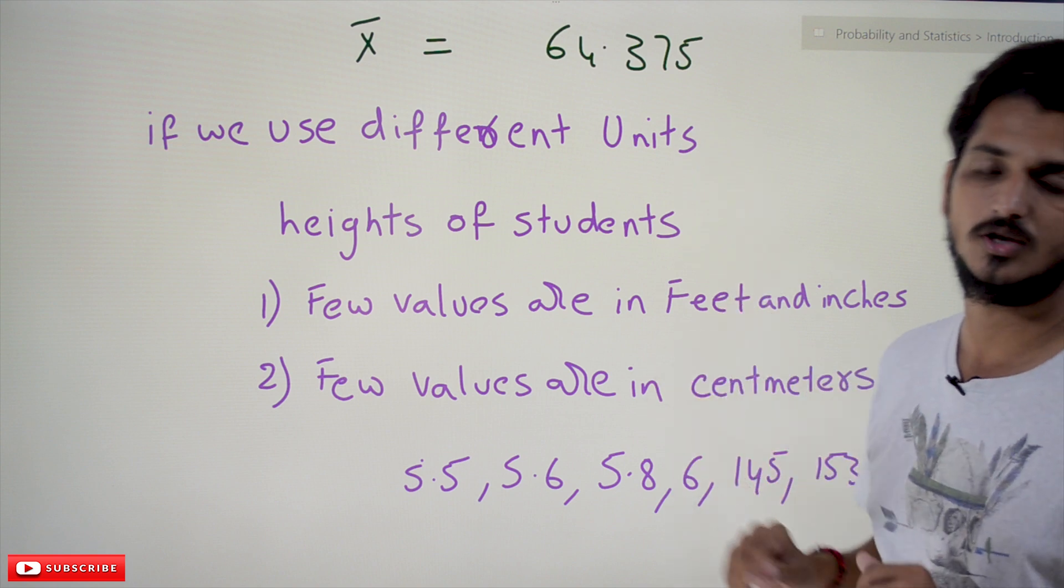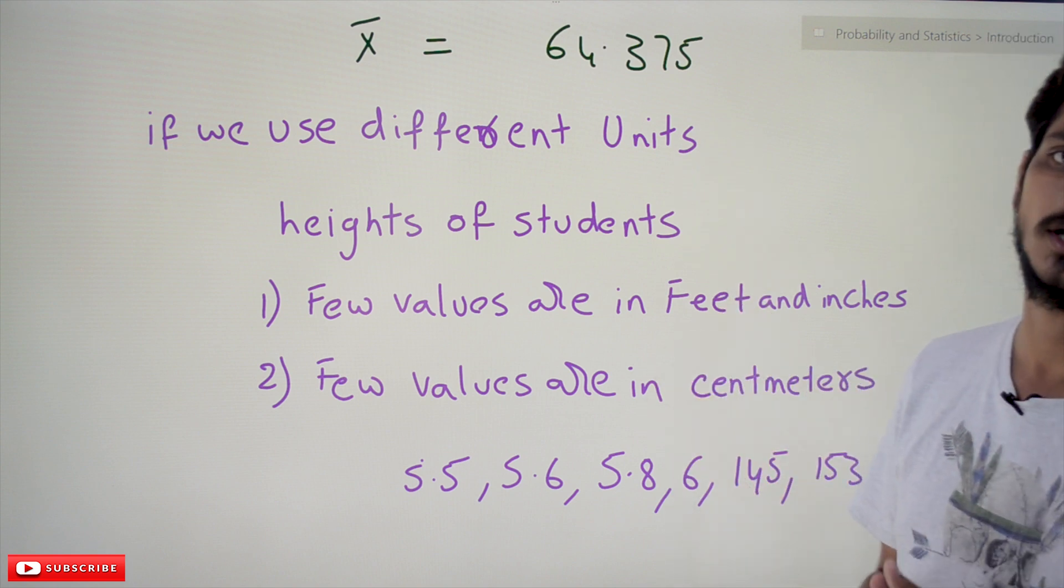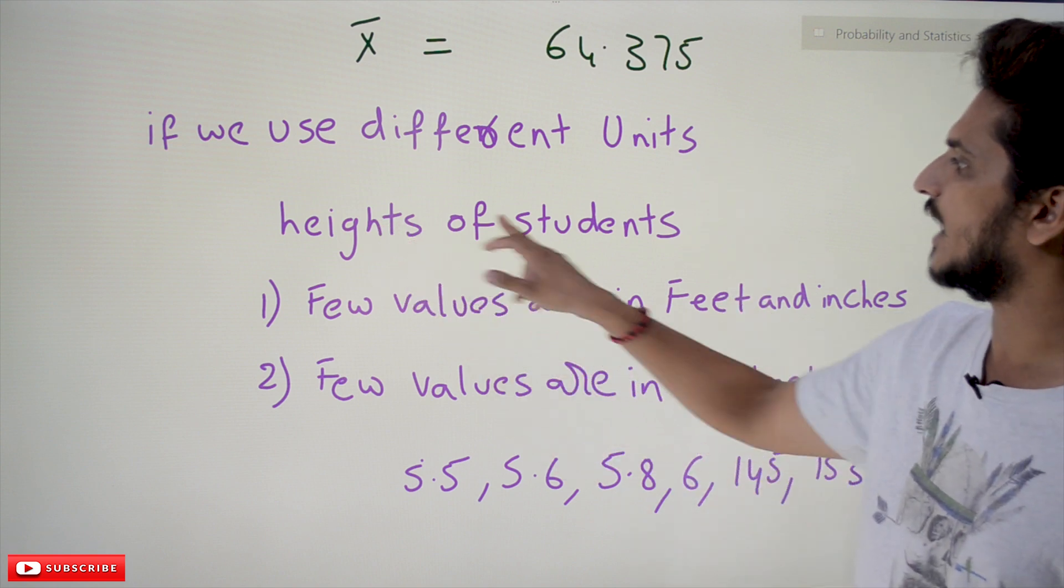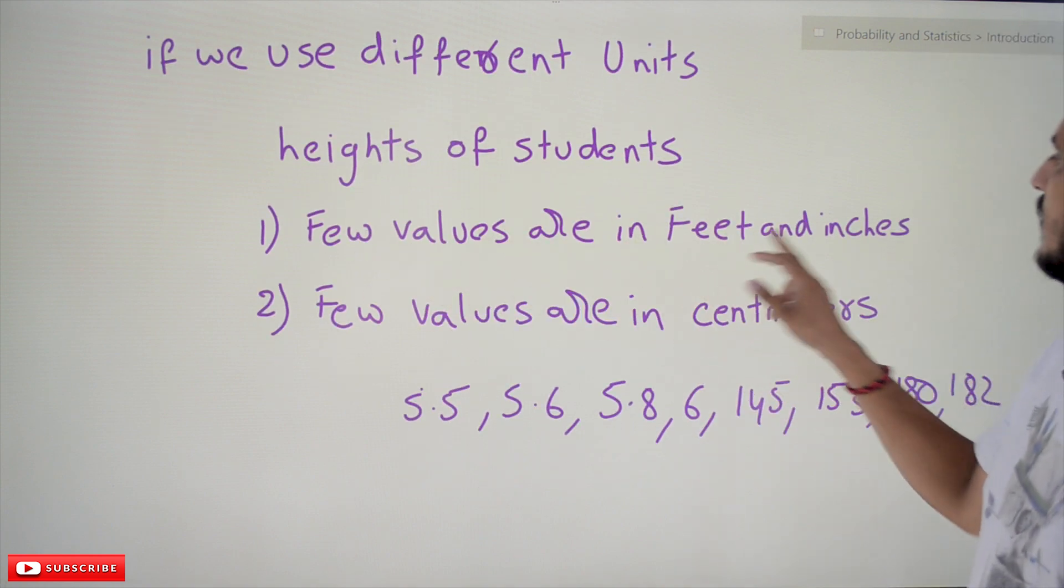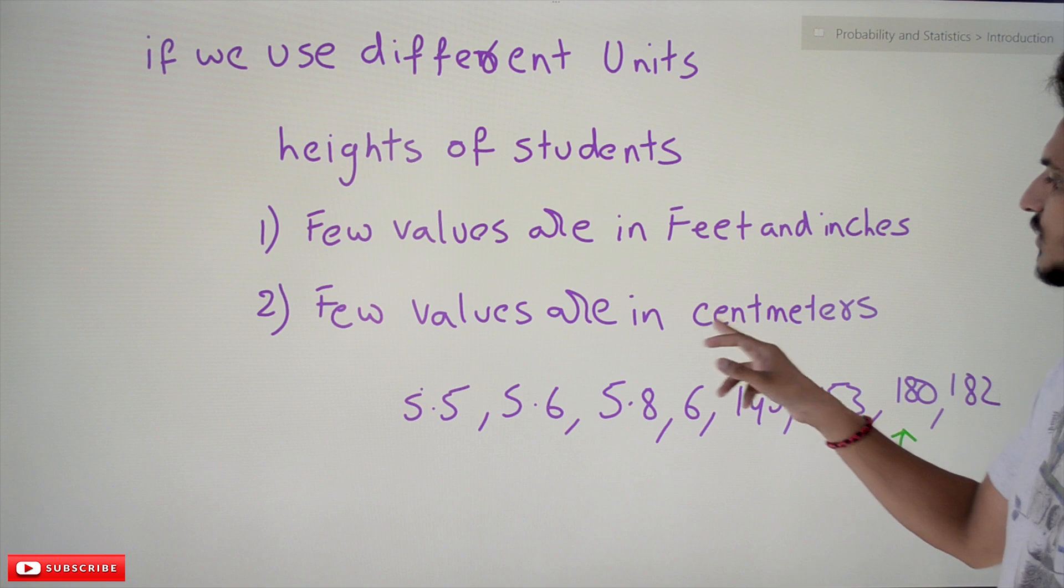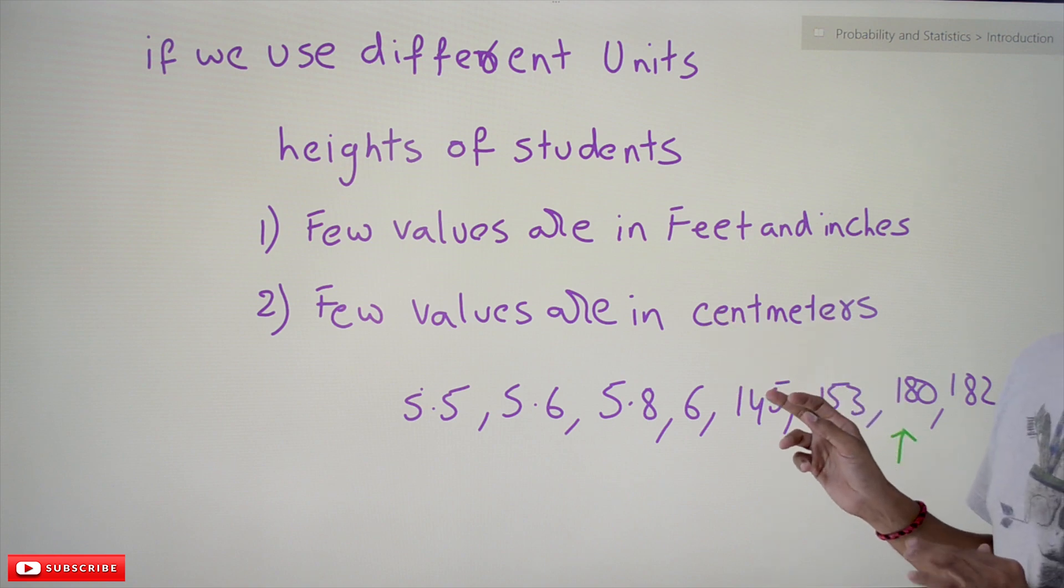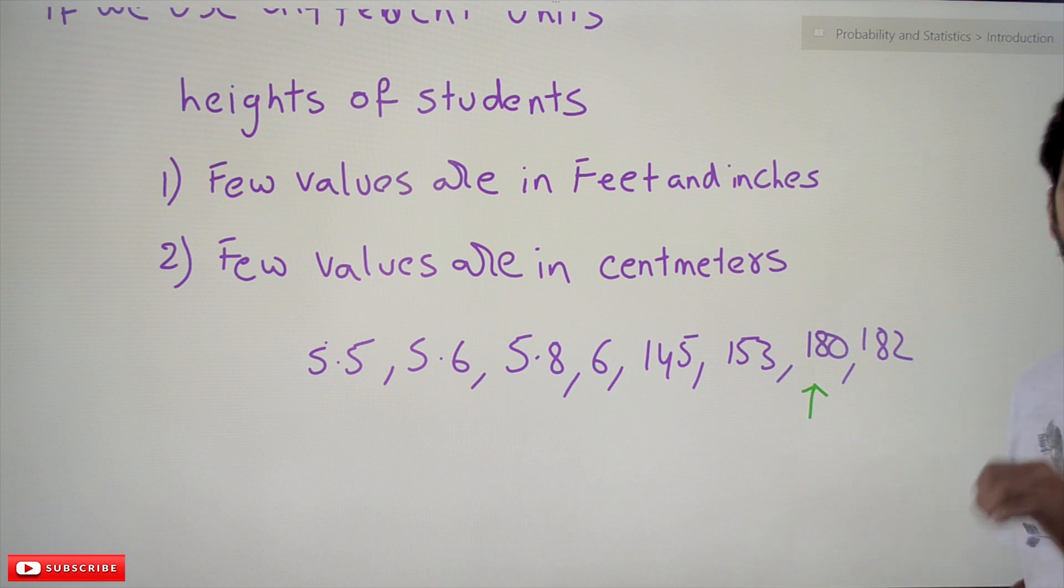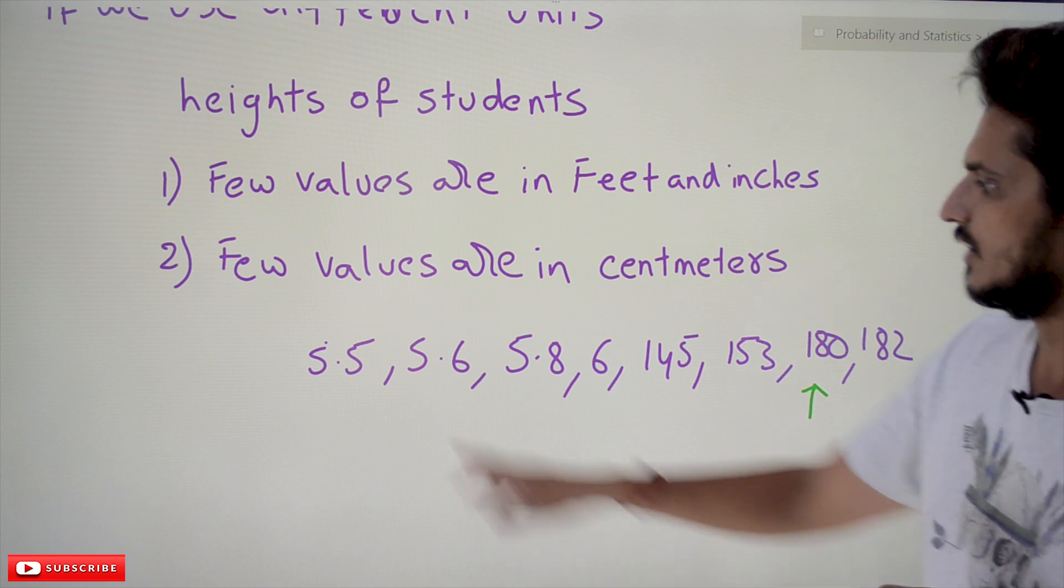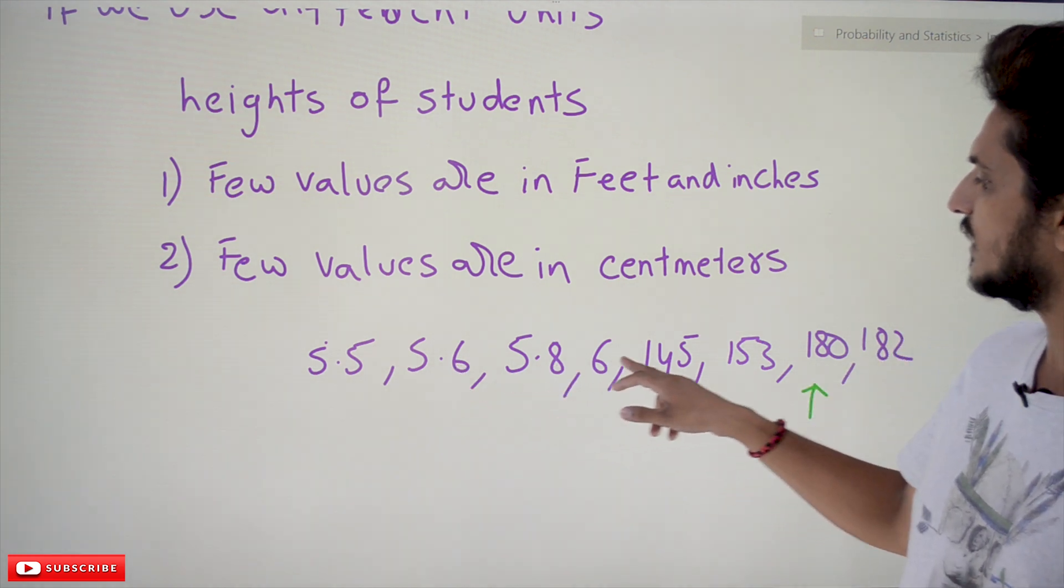Next, coming to that, if we use different units, you should not use different units. Let's take an example: heights of students. If you take the heights of students, a few values are in feet and inches, a few values are considered in centimeters. You should not consider like this; all of them should be considered in the same units, then only it will work. 5.5, 5.6, 5.8, 6—these are taken in feet and inches. 145, 153, 180, 182—these are taken in centimeters.